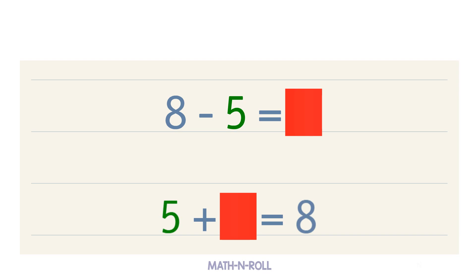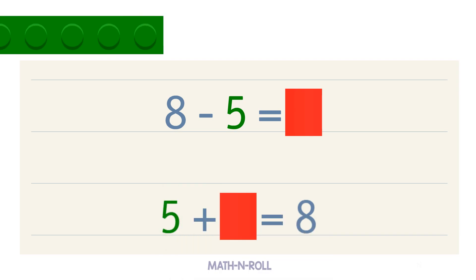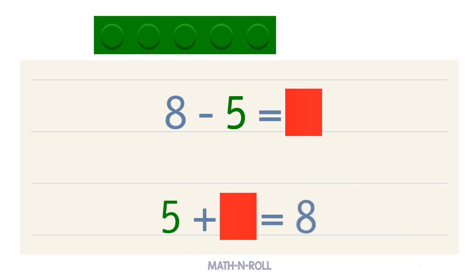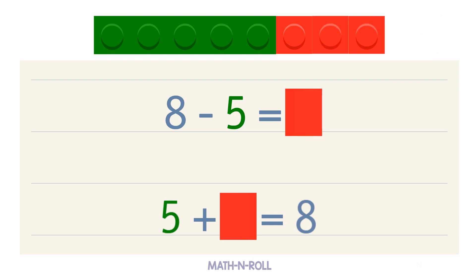Let's use the model to solve the addition fact. We have 5 pieces. How many pieces do we add to make 8? 1, 2, 3. We add 3 pieces to make 8, so 5 plus 3 equals 8. 3 is our blank, so 8 minus 5 equals 3.